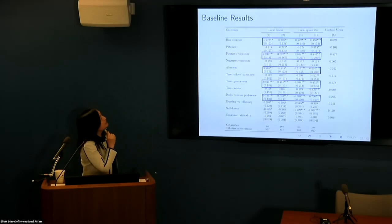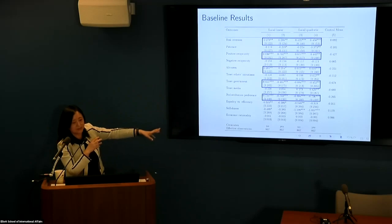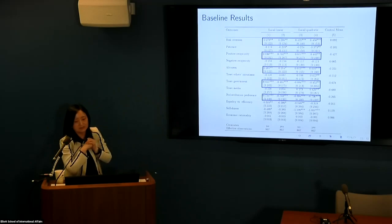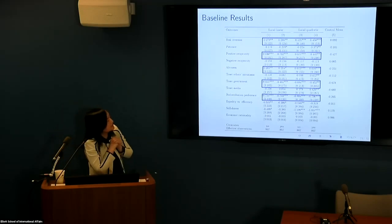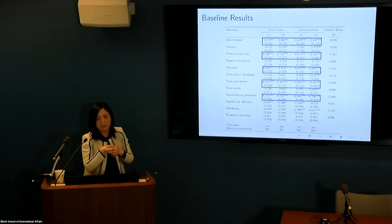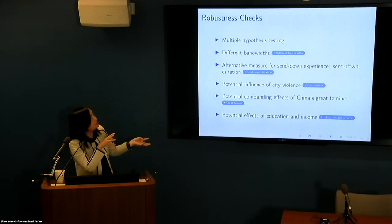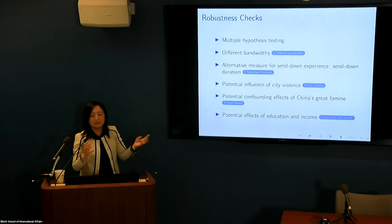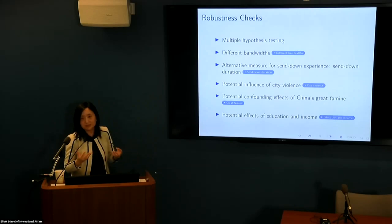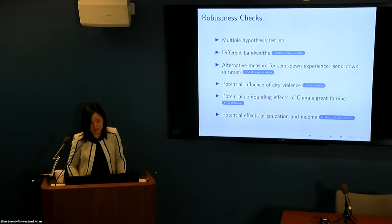Here are our main results. We have 12 measures of economic preferences and look at the send-down effect on these outcomes — these are our second-stage estimates. We see that the send-down experience really makes people more risk averse, have more positive reciprocity and more altruism, but less likely to trust the government or support redistribution. We have a bunch of robustness checks — different measures of send-down experience (not just zero/one, but also duration), potential influence of city violence during the Cultural Revolution, potential confounding effects of the Great Famine, and effects of education and income.